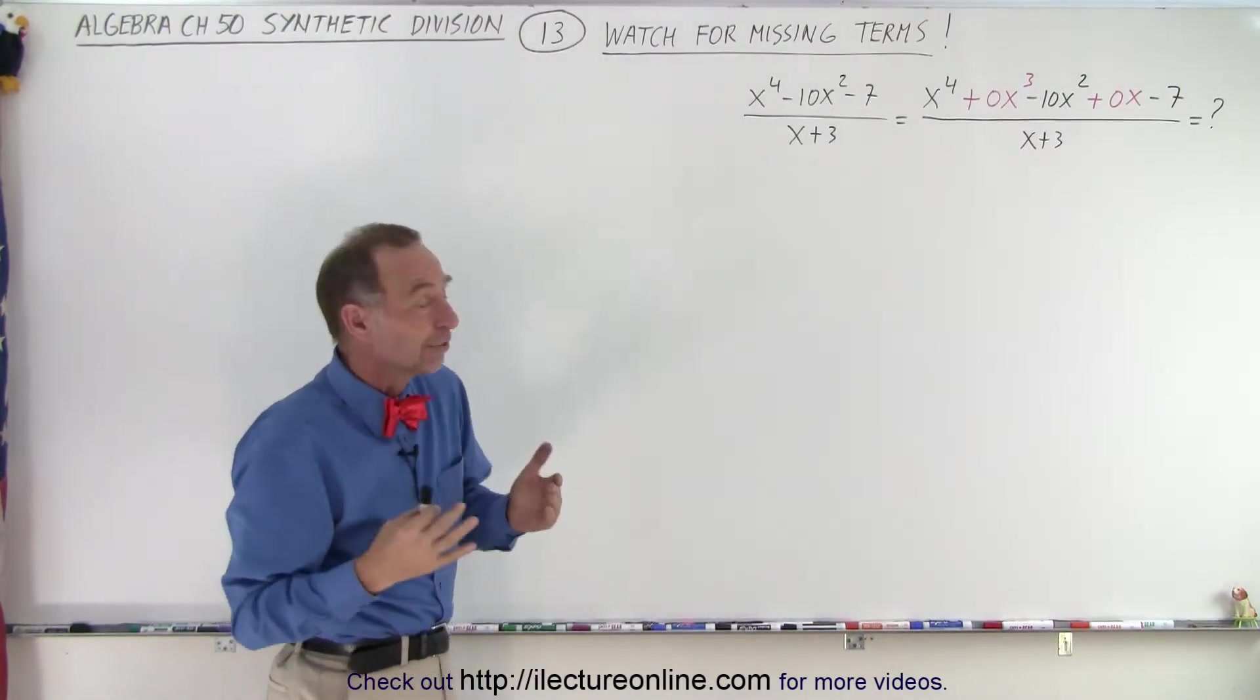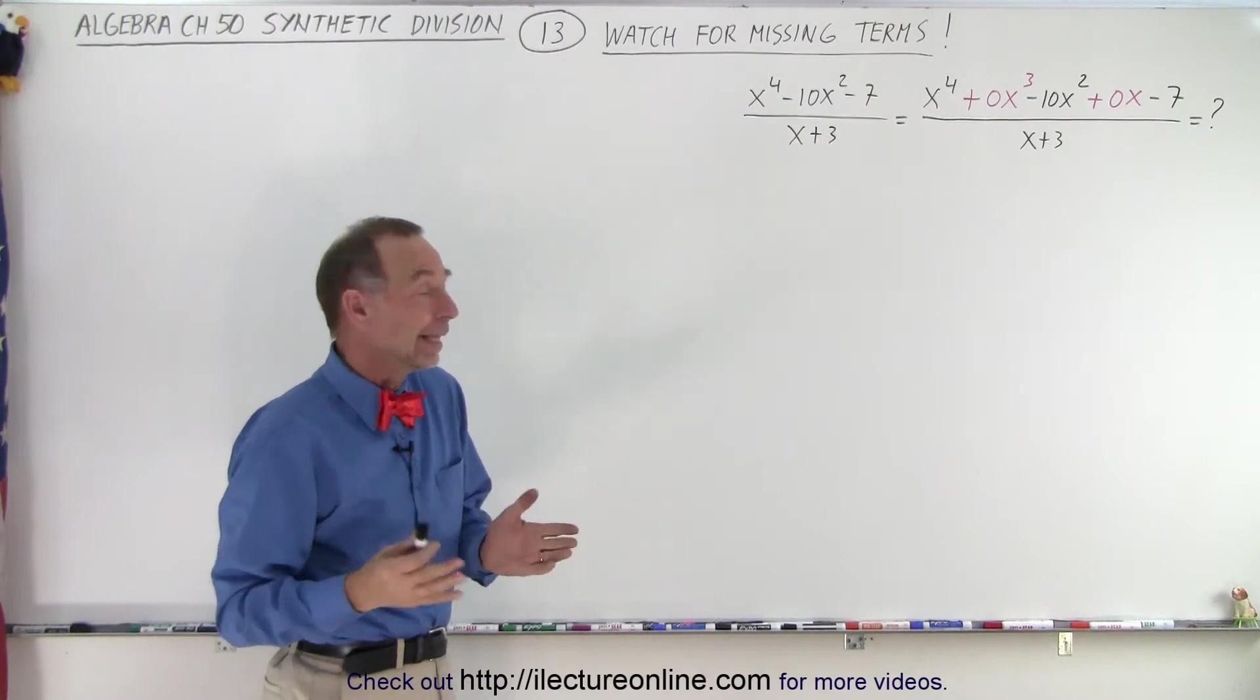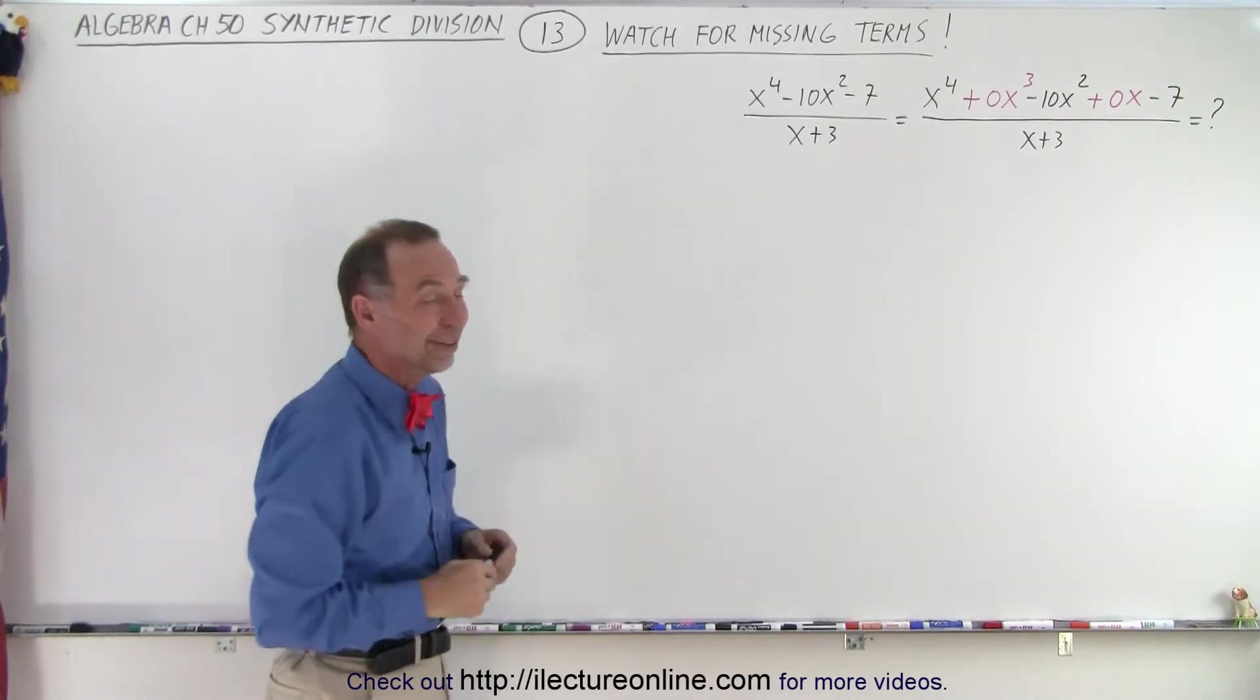So when you're going to use synthetic division, you really need to add those in there. And then when you set it up, those zeros need to be there.